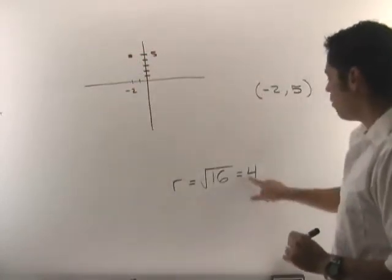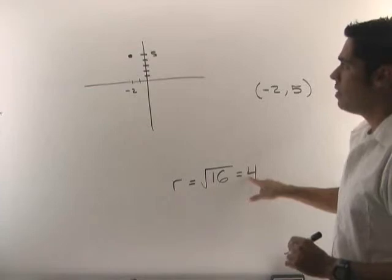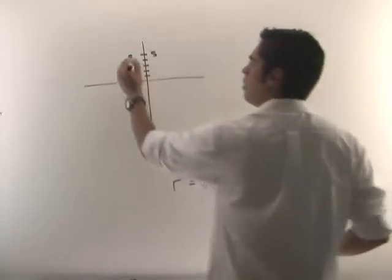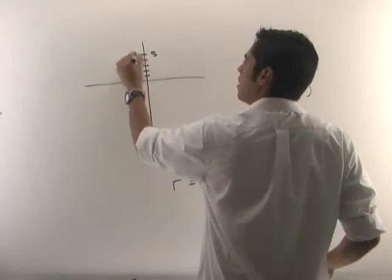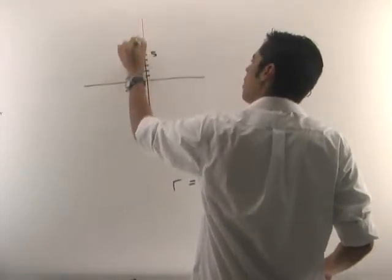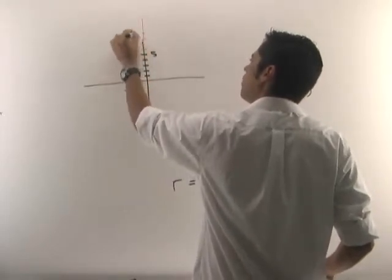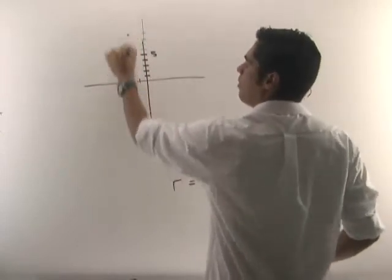Now what we're going to do is we're going to go 4 units for our radius. So I'm going to go 4 units down from the center. 1, 2, 3, 4, that's here. And I could just go and draw it 1, 2, 3, 4 units up. So up and below the center.